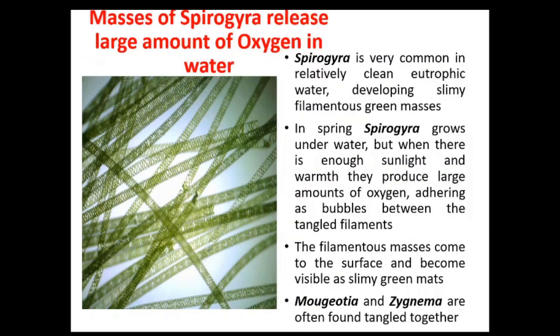Masses of Spirogyra in water release large amounts of oxygen. Spirogyra is very common in relatively clean eutrophic waters, developing slimy filamentous green masses over the water surface. In spring, Spirogyra grows underwater, but when there is enough sunlight and warmth, they produce large amounts of oxygen which adhere as bubbles between the tangled filaments, and the filamentous masses soon come to the surface and become visible as slimy green mats.